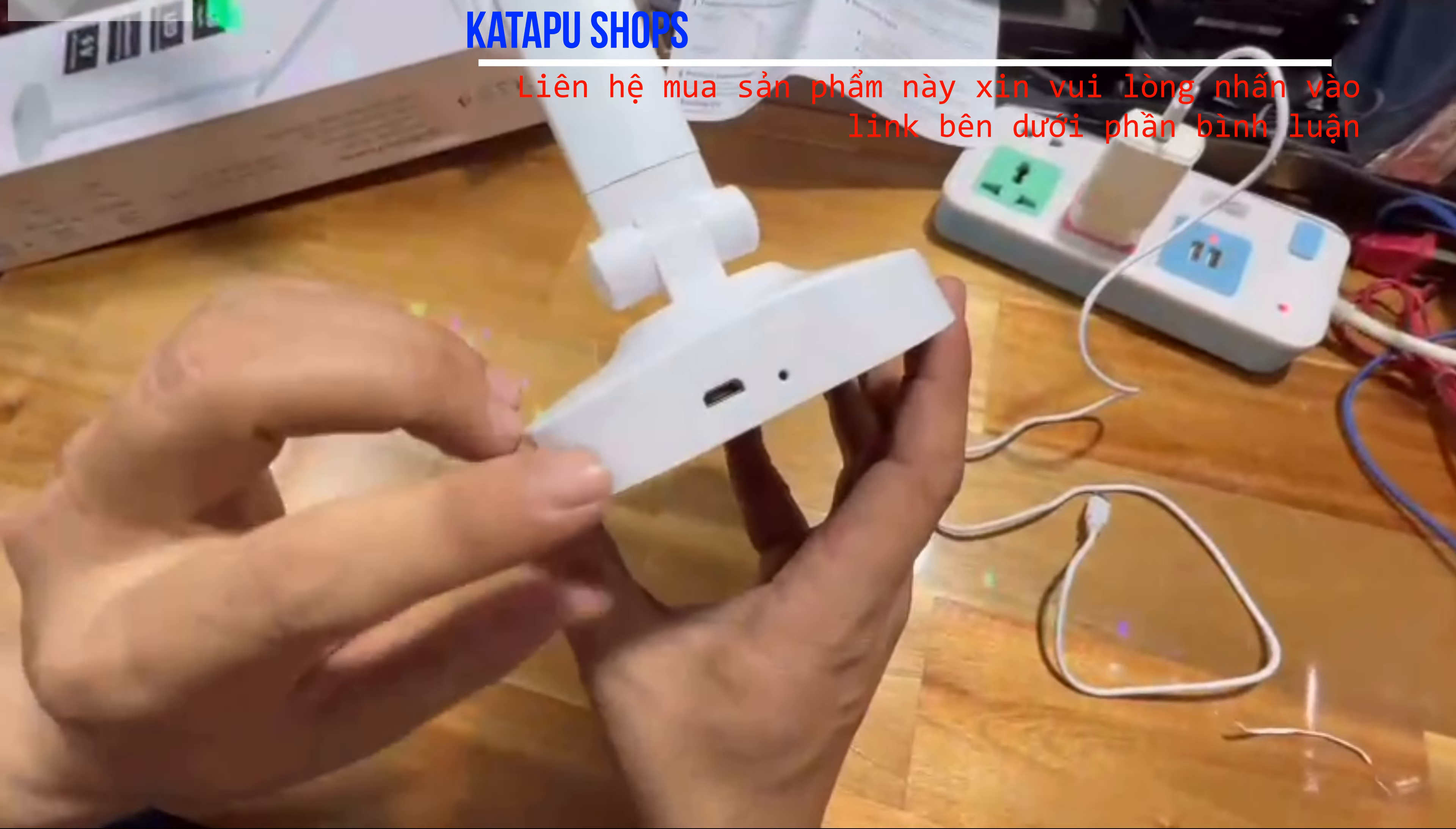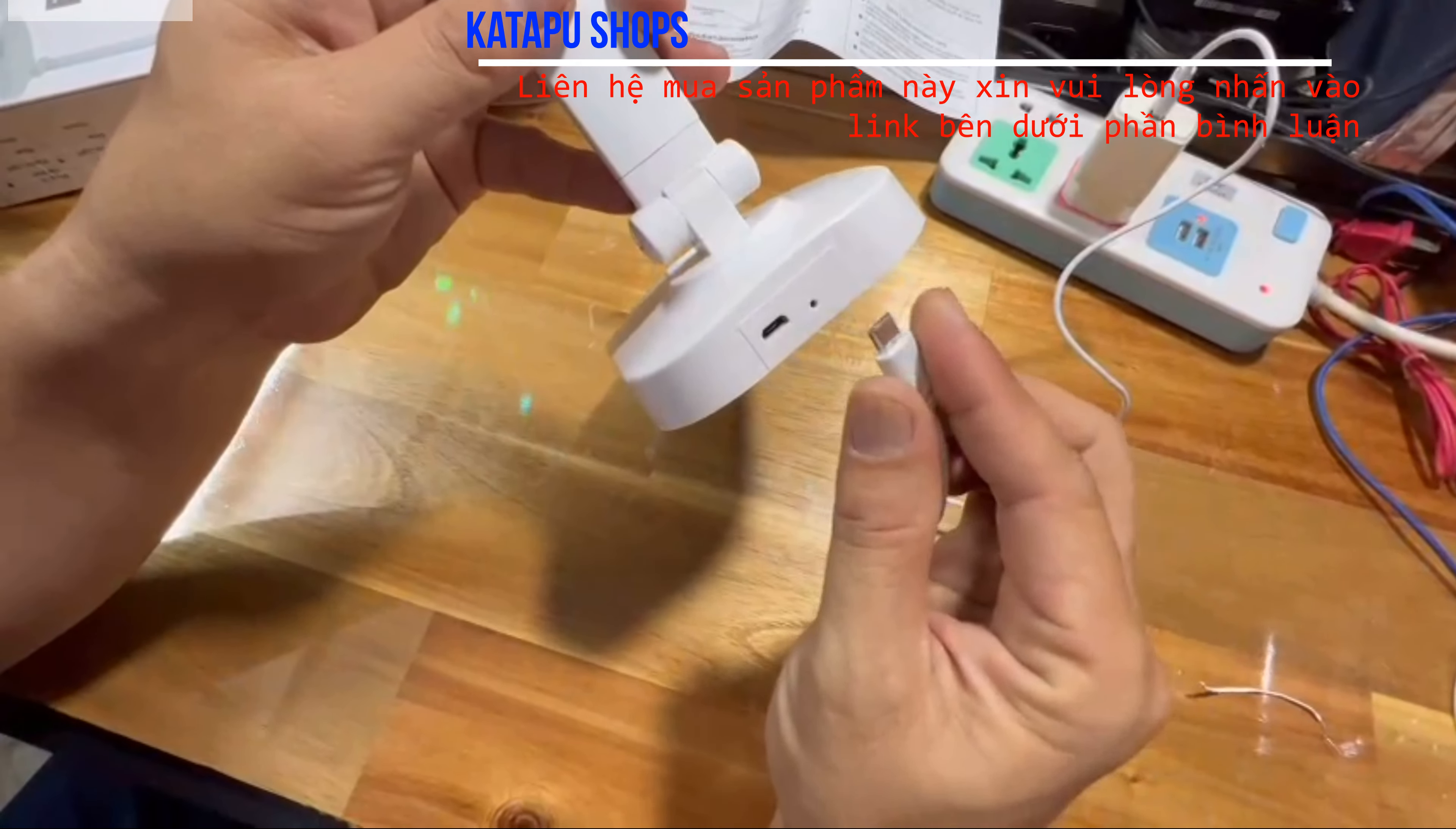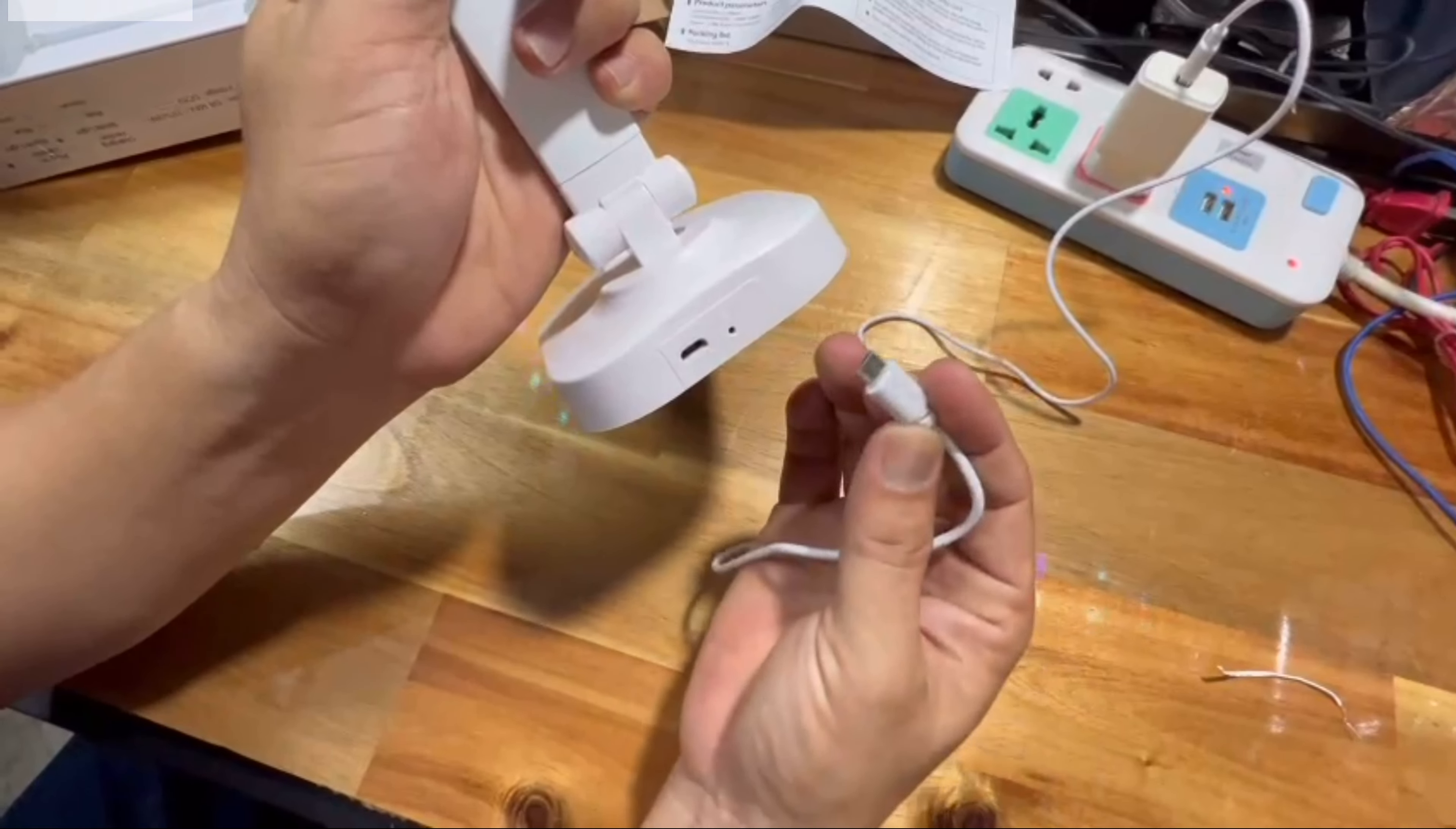Ở dưới đây nó có hai cái: bộ đầu tiên cắm nguồn điện vào, cái này là đèn báo hiệu đã có nguồn. Các bạn lưu ý trên dây sạc nó có hai rãnh hai bên, mình cắm đúng hai rãnh hai bên trên lỗ có đèn. Bạn cắm ngược lại không được, nó sẽ gãy. Bạn cắm đúng chiều vào.